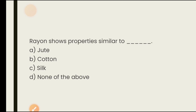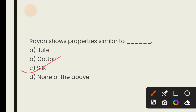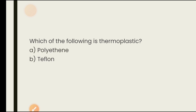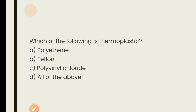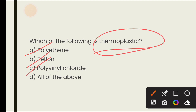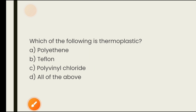Rayon shows properties similar to which fiber? Rayon shows properties similar to silk. The answer is C. Which of the following is thermoplastic? Options are polyethylene, teflon, polyvinyl chloride, all of the above. All of the above are thermoplastics — you can reuse them by heating and reshaping. Thermosetting plastics cannot be reused once set.